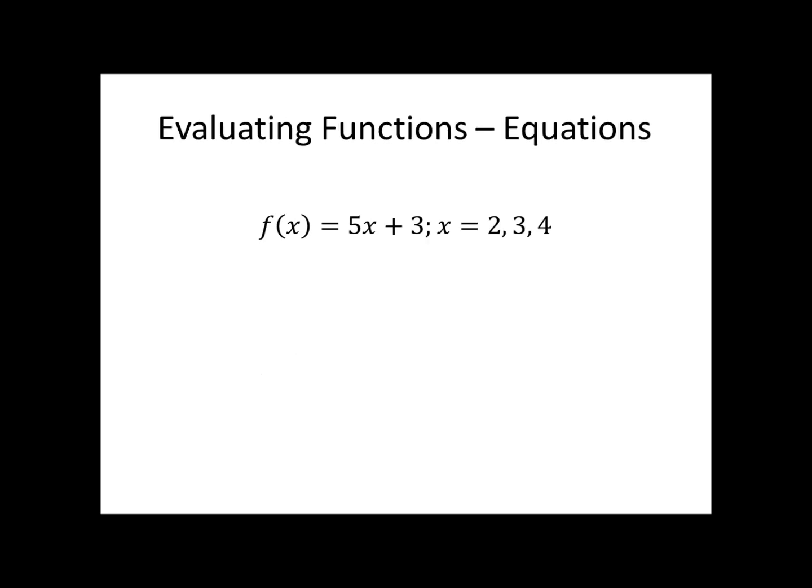So let's take a look at how to evaluate a function when it's in an equation form like this. So we'll take our function f(x) = 5x + 3. We're supposed to evaluate it at x equals 2, 3, and 4. Meaning that we're going to take 2, plug it into the function wherever we see x, we're going to use our order of operations and get an output number for this function. So in this case, f of 2 is equal to 13. f of 3, plug in 3, we get 18. And f of 4 is equal to 23.